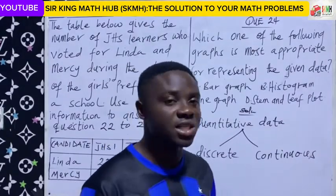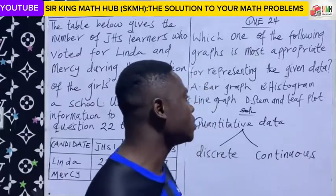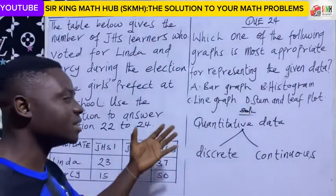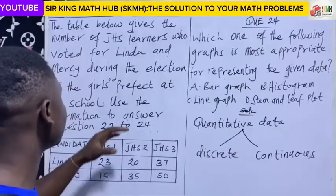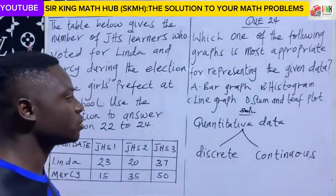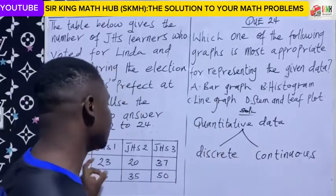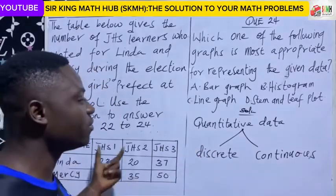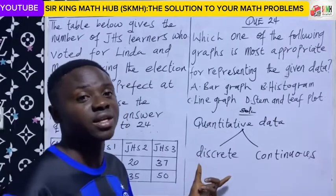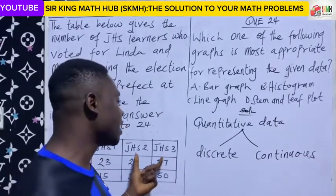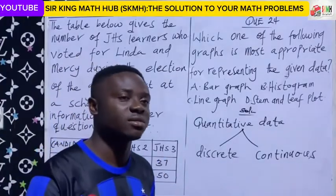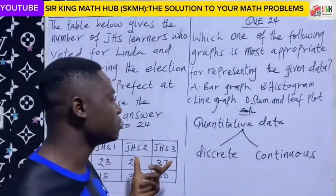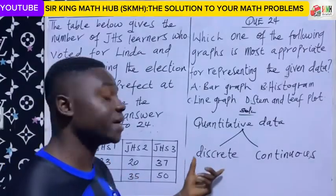So that is the difference between discrete and continuous data. Now, back to the question. This data here — is it quantitative or qualitative data? We are looking at the number of votes. Obviously, it is quantitative data because it deals with numbers. But which category of quantitative data is the number of votes? Obviously, it is discrete data. Why? Because the number of votes were collected by counting, and the number of votes are represented using counting numbers or whole numbers.